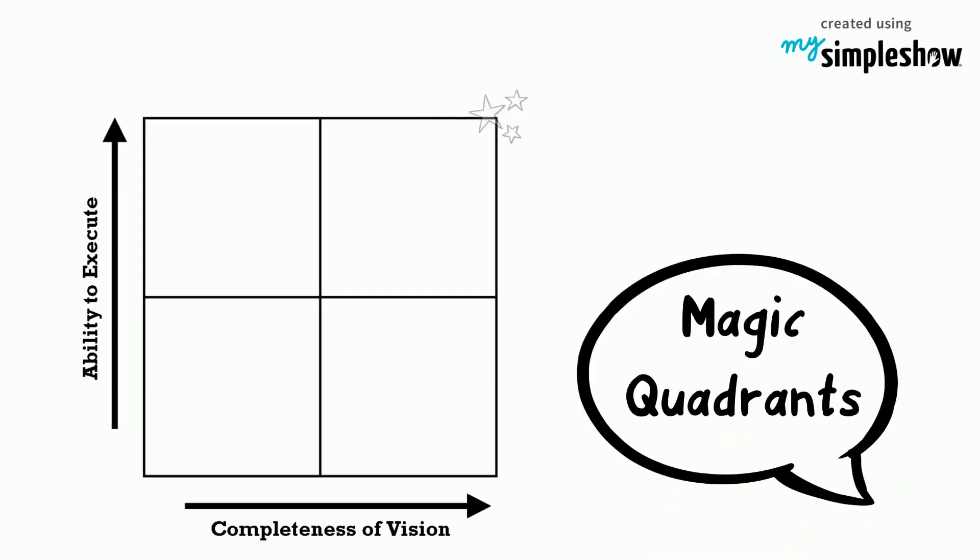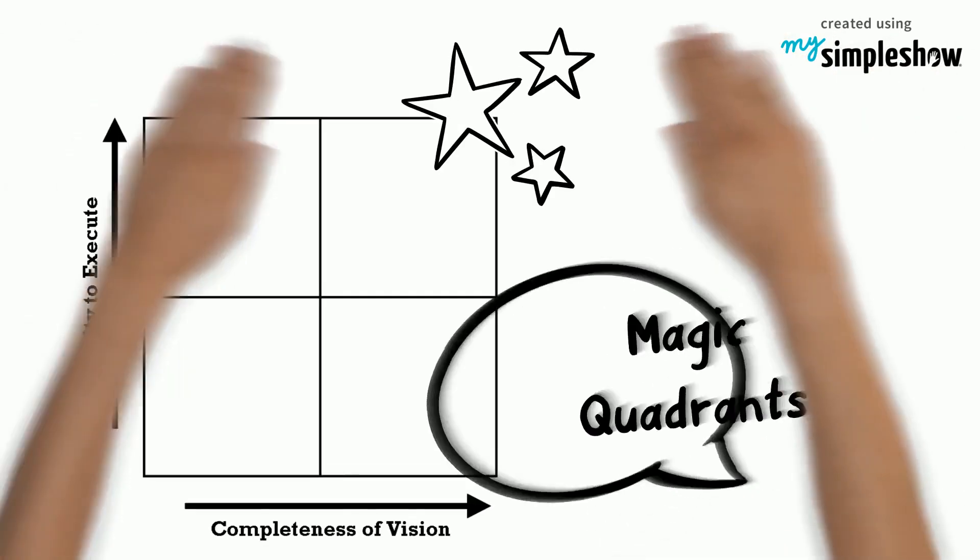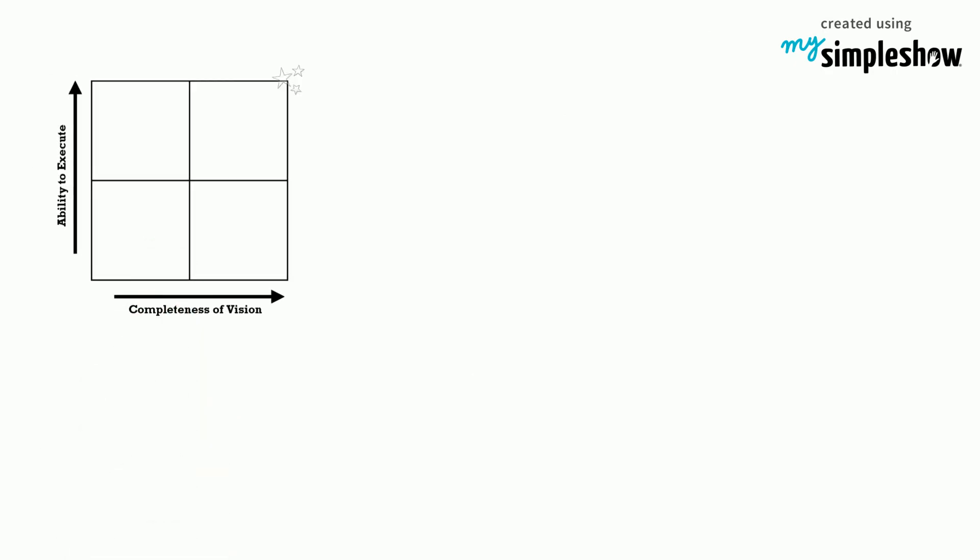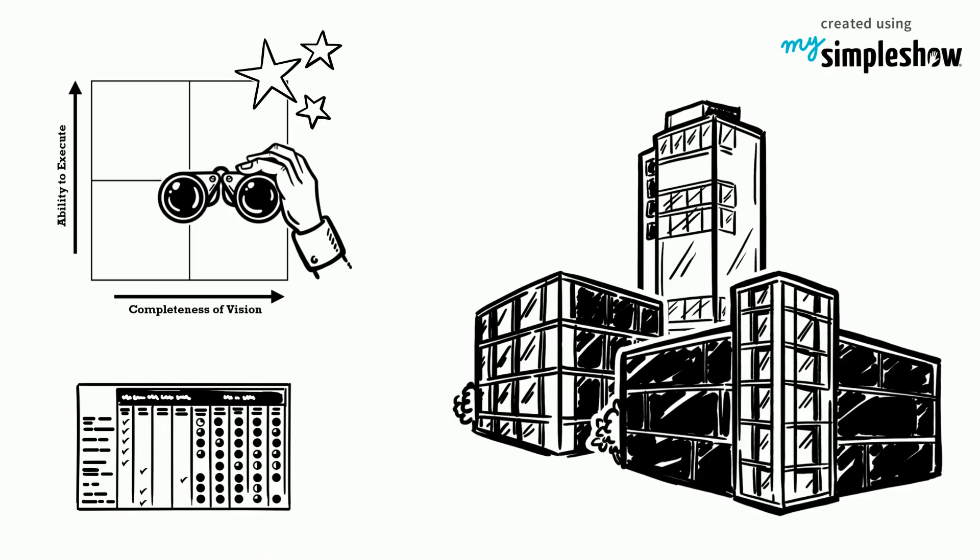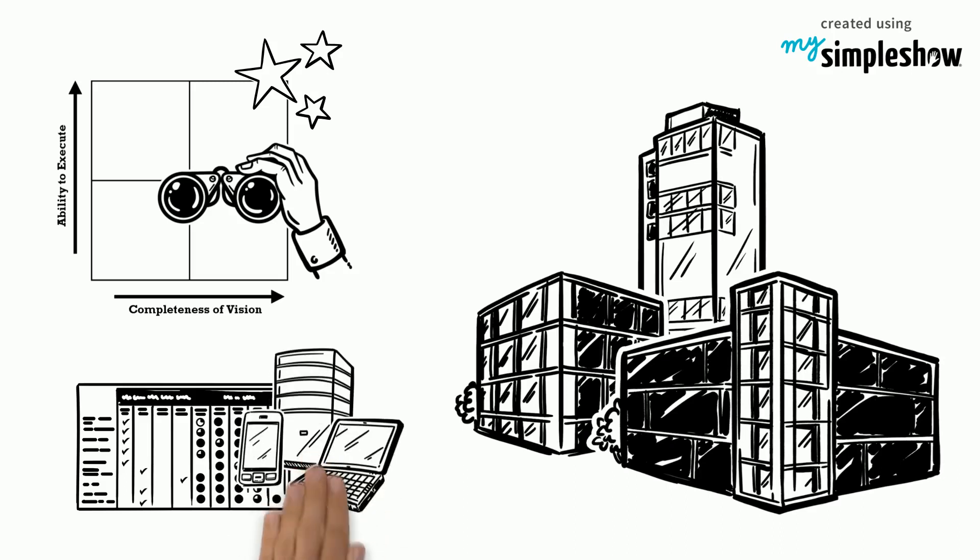We explain magic quadrants. A magic quadrant is a visualization tool for monitoring and evaluating the positions of companies in a specific, technology-based market.